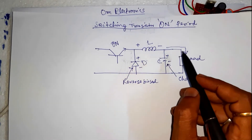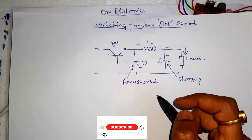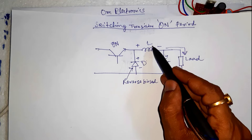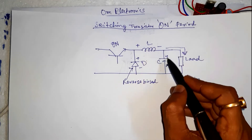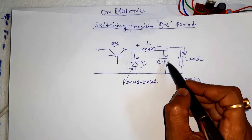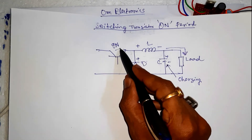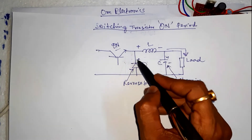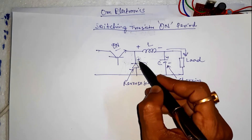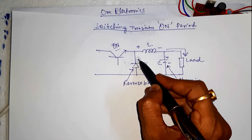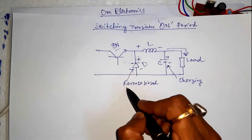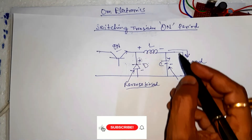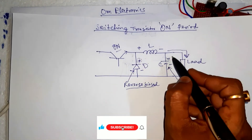Initially, current flow through the load is restricted as energy is also being stored in the inductance L. Therefore the current in the load and the charge on the capacitor builds up gradually during the ON period. Throughout the ON period there will be a large positive voltage across the diode, so the diode will be in reverse bias condition and therefore play no part in the action.